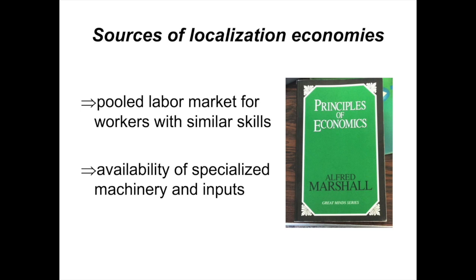These first couple of localization economies were first noted by Alfred Marshall in the book Principles of Economics. One key localization economy is a thick labor market due to a concentration of workers with similar skills. A pooled labor force is good for firms who hire such workers, and also good for workers in search of jobs. Think about the labor market for computer scientists in and around Silicon Valley — technology firms locate there, at least in part, to access these workers, and computer scientists move there in search of a good job.